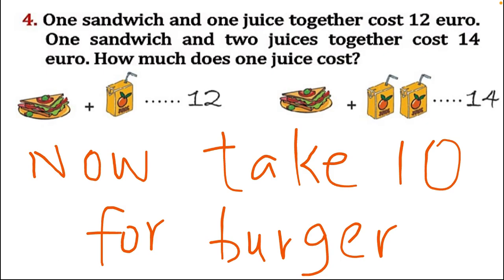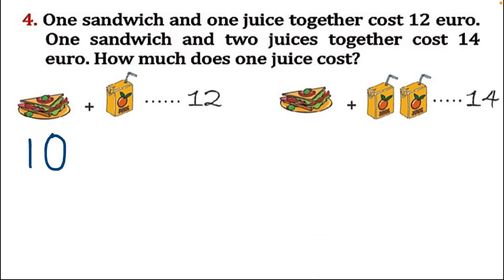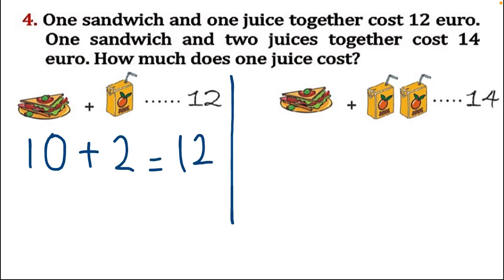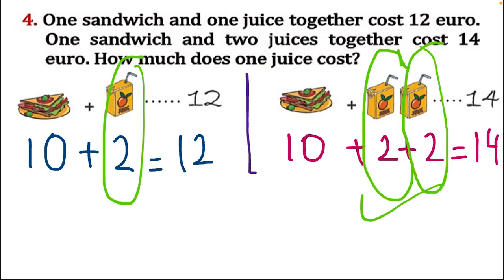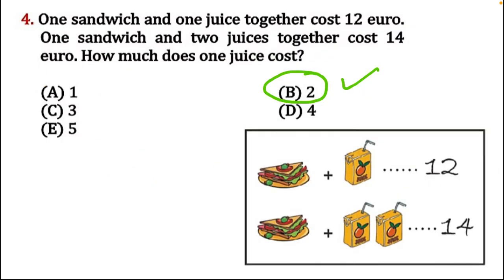We skip nine because we are not using odd numbers. Try ten for the burger: ten plus two equals twelve — correct. Now check the second equation: ten plus two plus two equals fourteen — correct! Both answers are right. The juice packet price is two, and both juice packets have the same price of two, so our answer is option B — two.